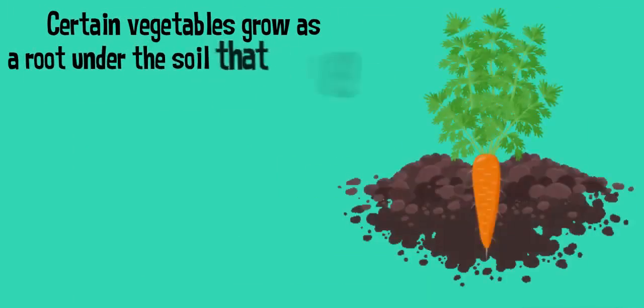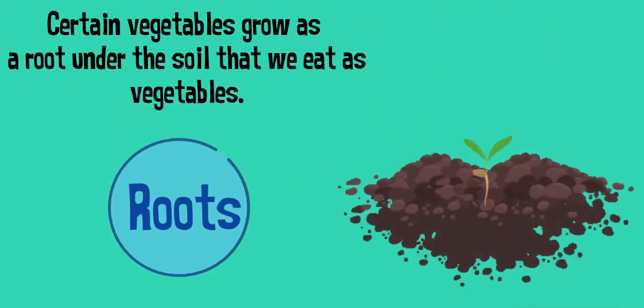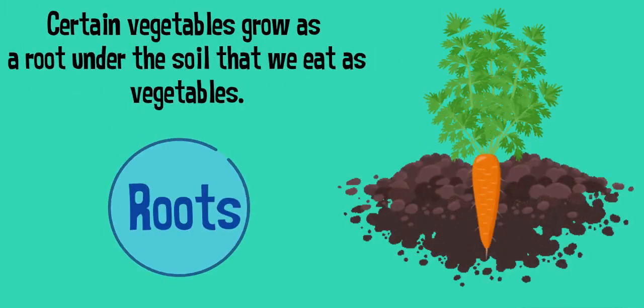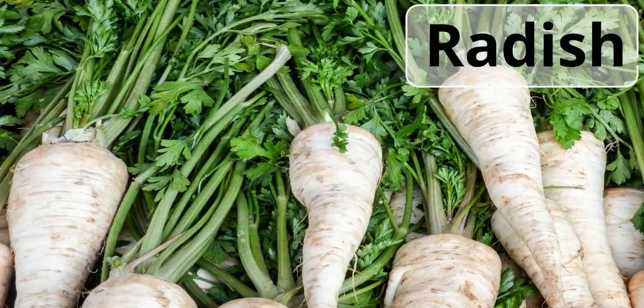Certain vegetables grow as a root under the soil that we eat as vegetables. For example, turnip and radish.